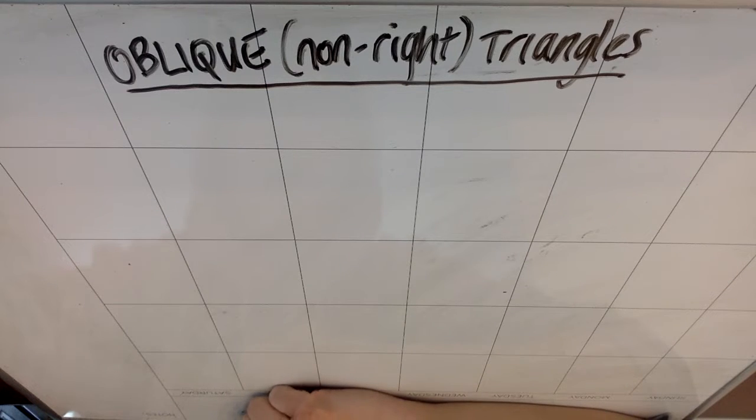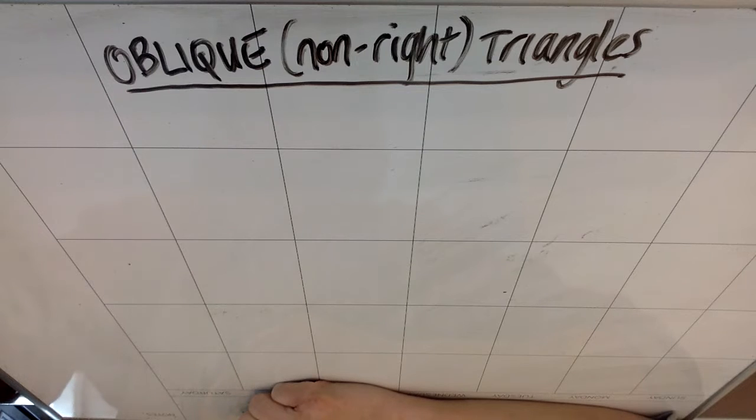All right, so we're going to start talking today about oblique triangles. That means non-right triangles.